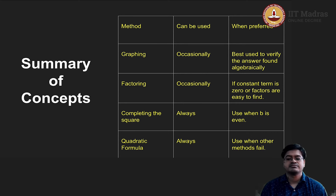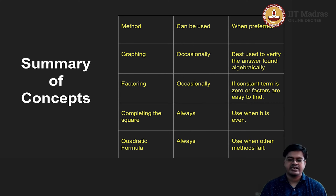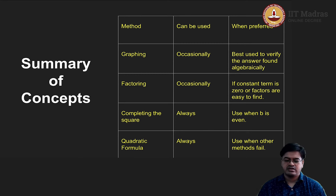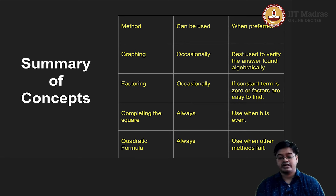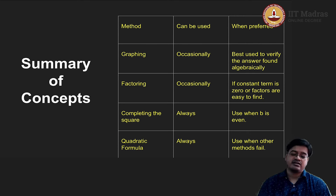The method of completing the square works all the time, and it is very easy when b is even; otherwise there may be difficulties. If the right hand side becomes negative, you enter the complex domain, which we are not dealing with in this course. The last method is the quadratic formula, which is derived from completing the square, and it always gives an answer. Completing the square and the quadratic formula will always give the answer regardless of whether the coefficients are rational, irrational, or other real numbers.